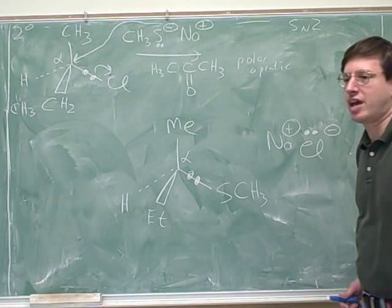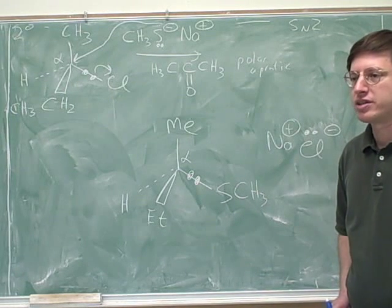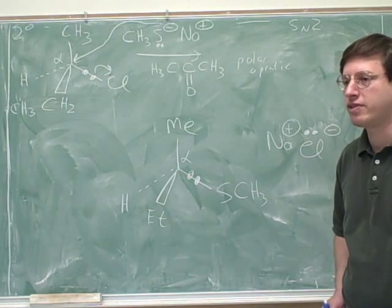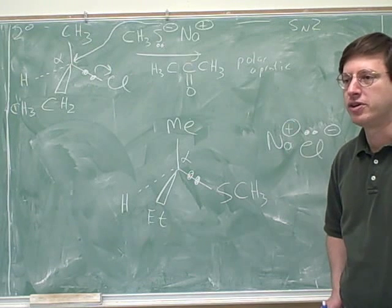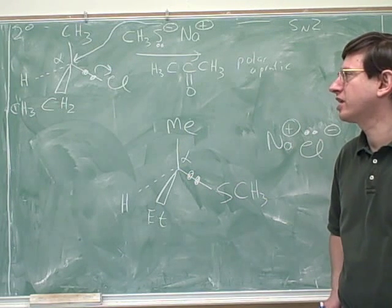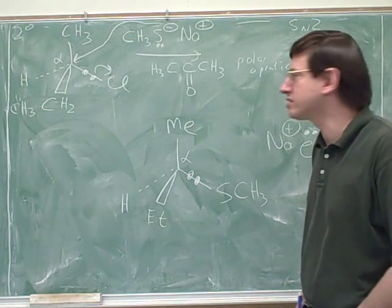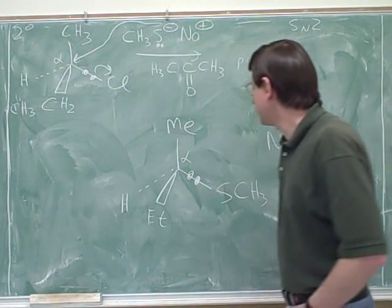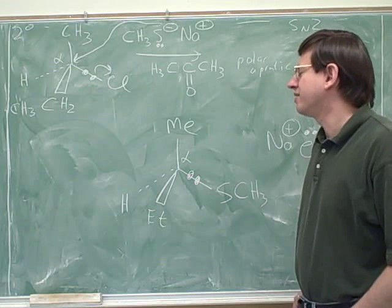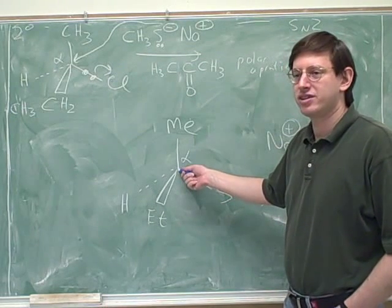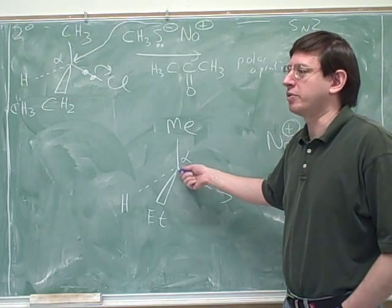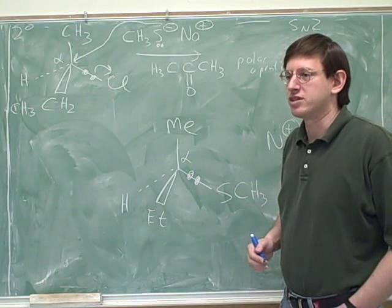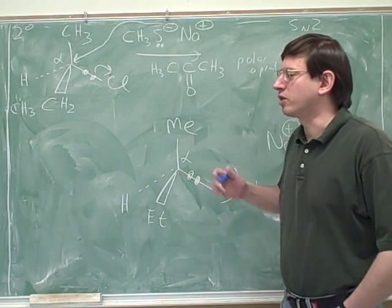Now we should think about the stereochemistry here. So are we going to get one product or two products? Yeah, SN2 only gives you one product. Does it give you retention of configuration or inversion? Inversion. We know it has to give inversion because the nucleophile has to come in opposite the leaving group because of steric hindrance. We're not drawing it that way, but that's how it's going to happen. So we're going to have inversion. So now we should learn what's the best way. Of course, that only matters if you have a stereocenter. Is this a stereocenter? Yes. If this wasn't a stereocenter, we wouldn't even have to worry about this. But this is a stereocenter.